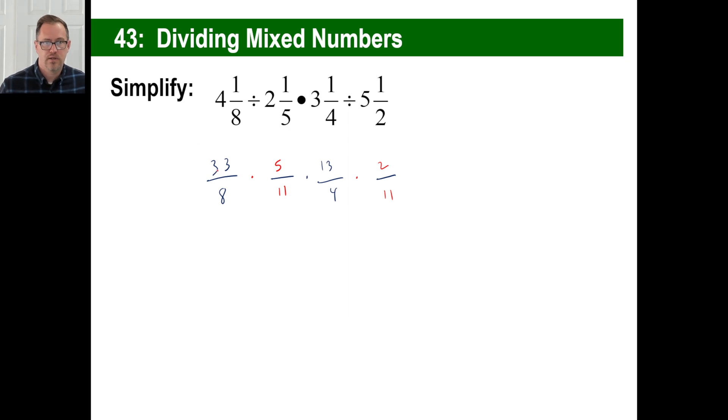Well, let's do some crossing here. 33 and 11, gone. That's going to be a 3. 2 and 4, that's a good one. Out of there. And then there's a 2. Any of the things we can... That looks like it's about it, doesn't it?